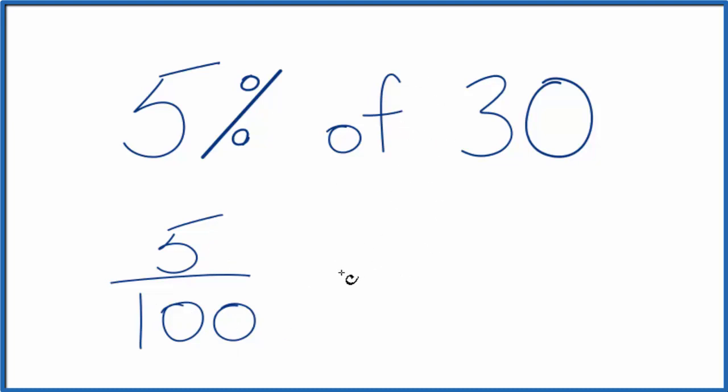We can take the 'of', treat that as multiplication, and we're going to multiply our 5 over 100 by 30. We're going to call that 30 over 1 because that makes it easier to multiply the numerators and denominators. It's still 30, you're just dividing by 1, just a little easier to work with.